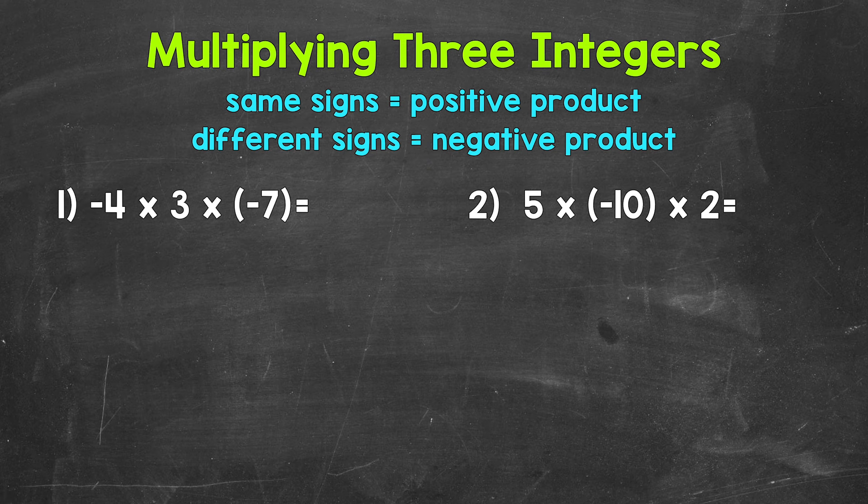Now remember, when it comes to multiplying integers, different signs equal a negative, and the same signs equal a positive. Let's jump into number one, where we have negative four times three times negative seven.